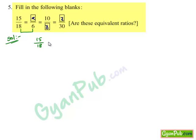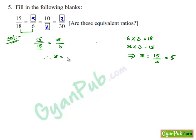That is, 15 upon 18 is equal to x upon 6. Here, we can observe that the denominator in the LHS, 18, is obtained by multiplying 6 with 3. Therefore, the numerator in the LHS should also be obtained by multiplying x by 3. This implies x is equal to 15 upon 3, which gives 5. Therefore, x is equal to 5.